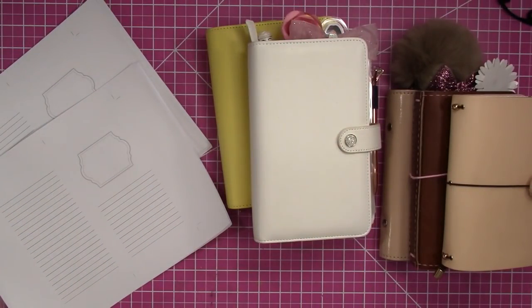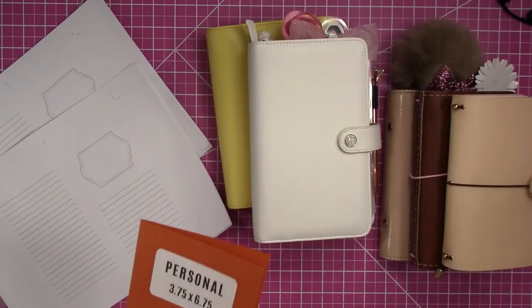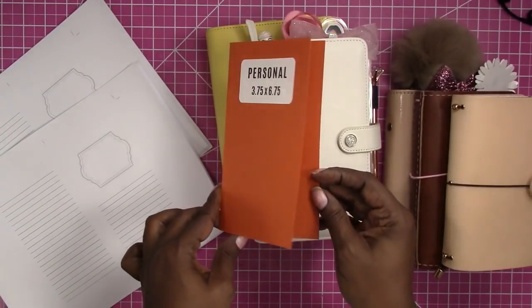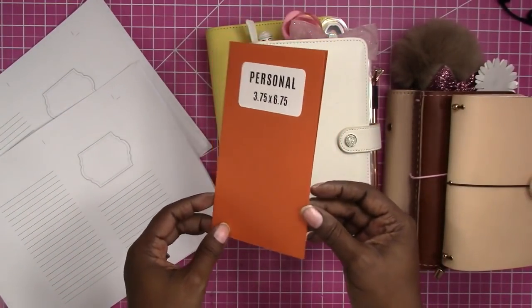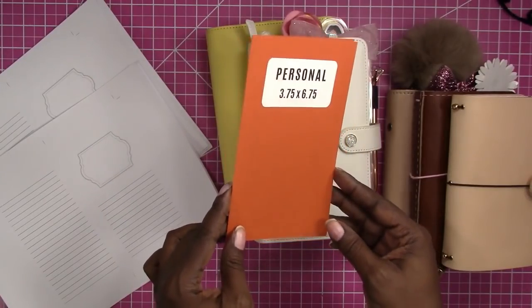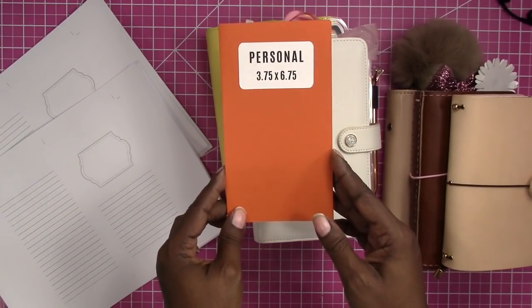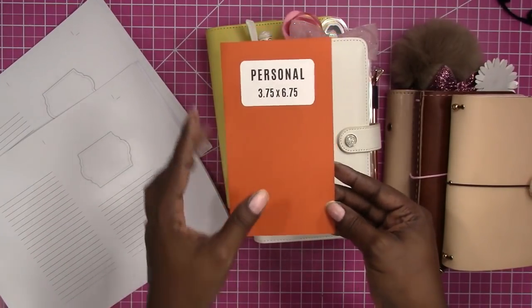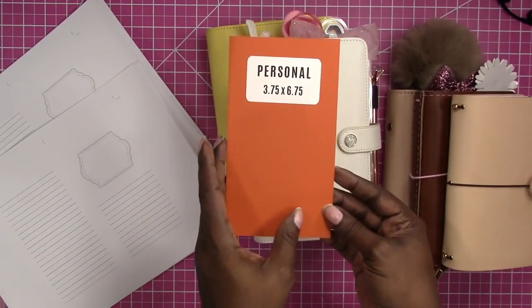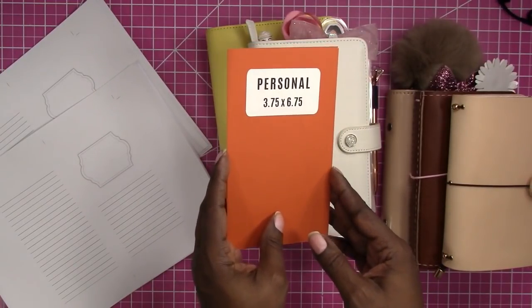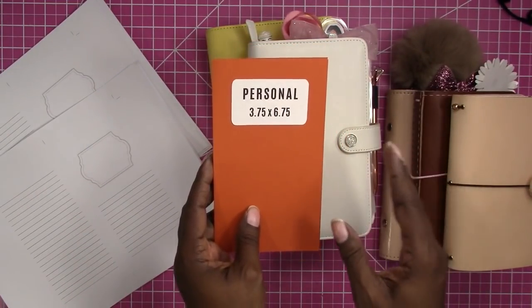Hi, this is Rochelle with Scrapcrafttastic and we're going to talk about personal size inserts and how versatile they are. The standard size for a personal size insert is 3.75 inches by 6.75 inches. That is your finished size, your closed insert size.